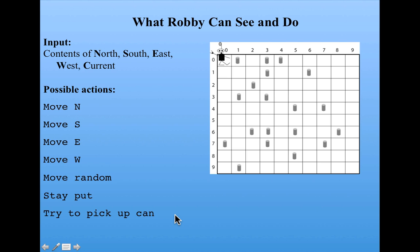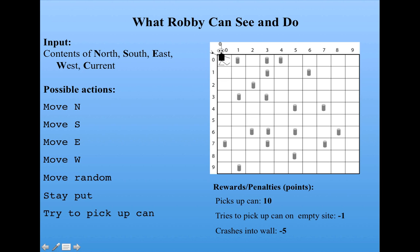If he tries to pick up a can and there's a can there, he succeeds. Or he can try to pick up a can mistakenly in an empty square. He has certain rewards and penalties: if he picks up a can, he gets ten points. If he tries to pick up a can on an empty site, he gets minus one point. And if he crashes into a wall, he gets minus five points. His overall score is the sum of the rewards and penalties he gets.